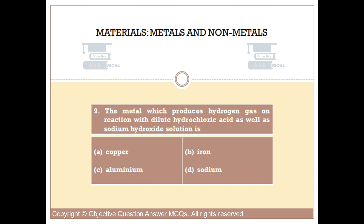Question number nine. The metal which produces hydrogen gas on reaction with dilute hydrochloric acid as well as sodium hydroxide solution is: Option B: Iron. Option C: Aluminium. Option D: Sodium.